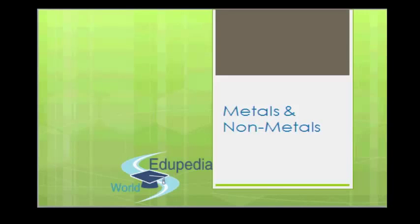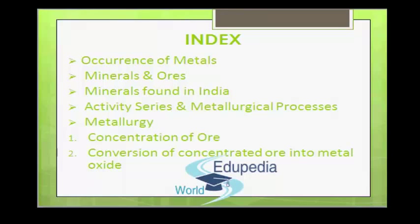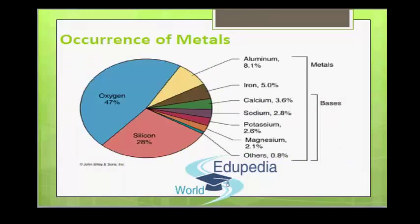Hello everyone, welcome to Edipedia World Videos. In today's lecture we will cover the topic under the following heads. First, we will discuss about occurrence of metals. The major source of metal is the earth's crust. Metals are also present in seawater in the form of metal salts such as NaCl, KCl, MgCl2, etc.